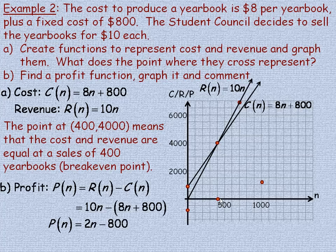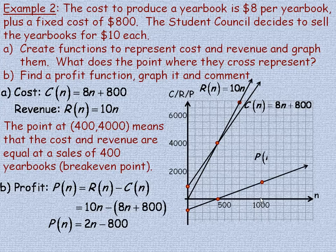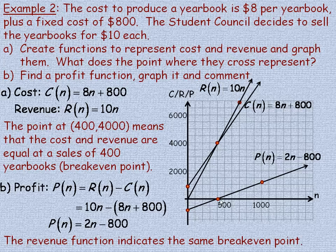Plotting one more point: if selling 1,000 yearbooks, 2 times 1,000 is 2,000, minus 800 is 1,200. So the profit is $1,200 at 1,000 yearbooks sold. Drawing a line through these points gives the profit function. Notice that below 400 yearbooks sold you're losing money, at 400 you break even, and anything above 400 the student council is making money. The further beyond 400 you go, the more money they will make.